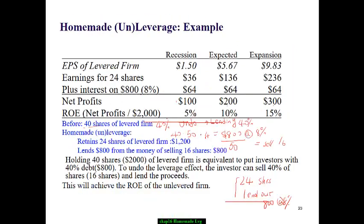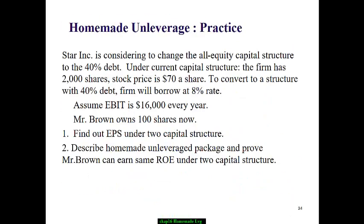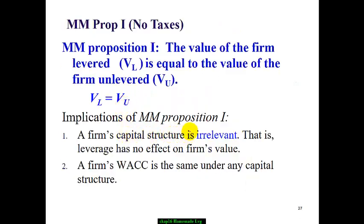Combining homemade leverage and unleveraged, we conclude that the capital structure does not affect investors directly, because they are smart enough to replicate returns under any capital structure. This is MM Proposition 1 in a world with no corporate tax: the value of the levered capital structure equals the value of the unlevered capital structure, meaning the choice does not affect firm value. This also implies the firm's weighted average cost of capital is the same.